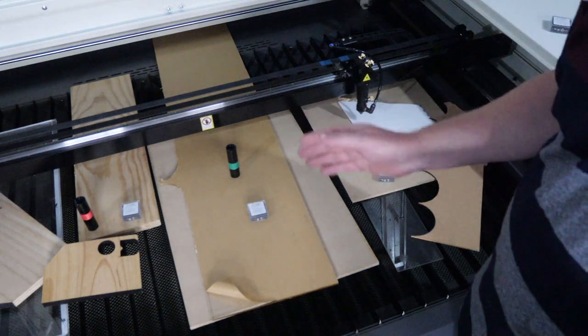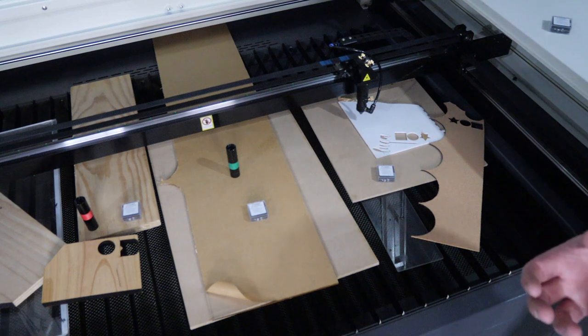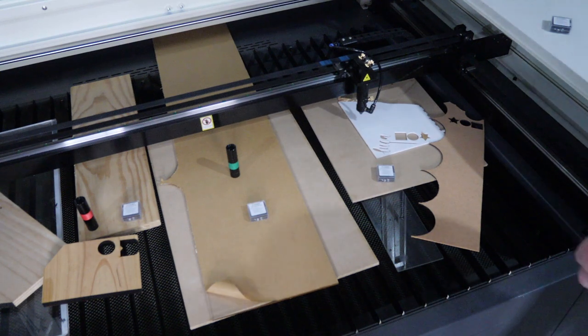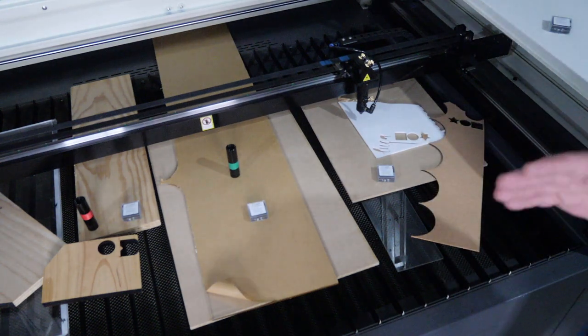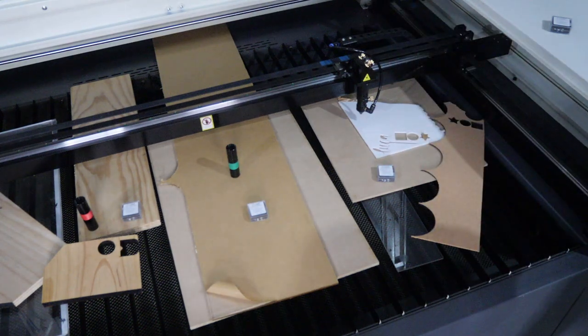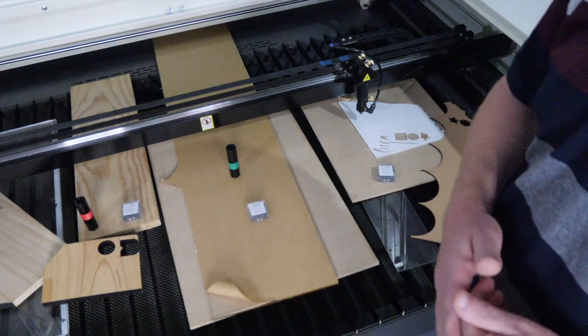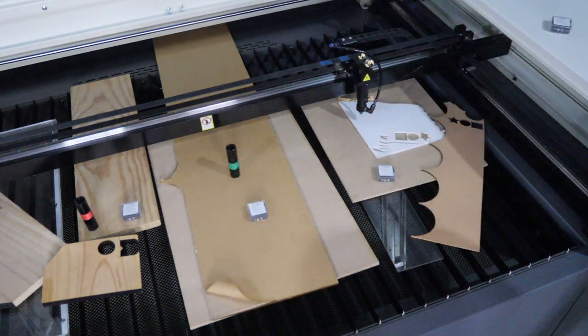Now the 4 inch lens, the spot size on that is a lot larger again, and it's not very good for high quality engraving. You can't get high resolution images out of a 4 inch lens. But the benefit of the 4 inch lens is that it will give us a greater focal tolerance that will allow us to cut through thicker materials like the 10mm acrylic, 20mm pine board, or even 1 inch thick plywood.